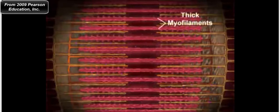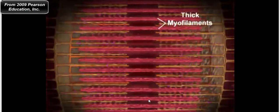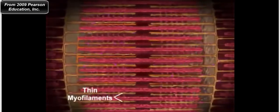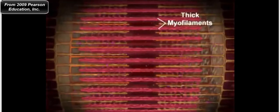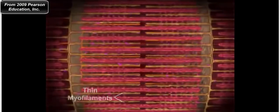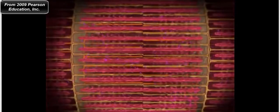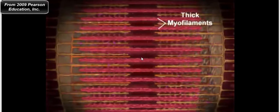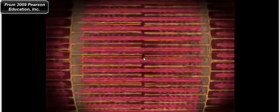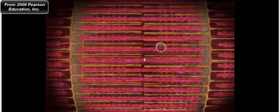The thick filaments are the myosin; the thin filaments are the actin. Notice how the sarcomere shortens toward the M line — the myosin heads located on the thick filaments are walking the thin filaments toward the M line. The thin filaments are being walked toward that central line.